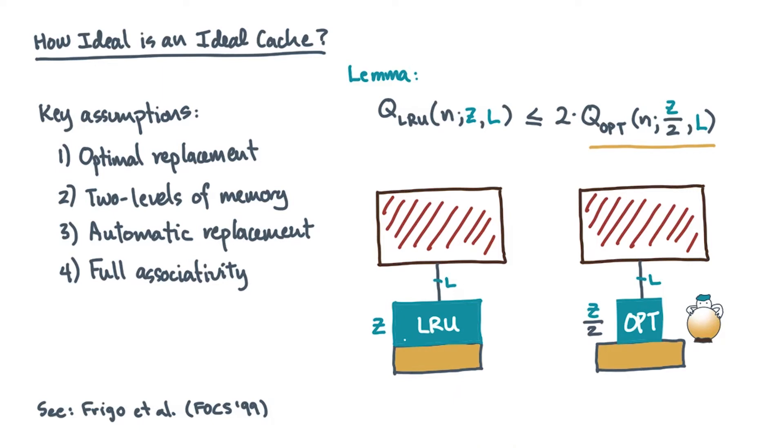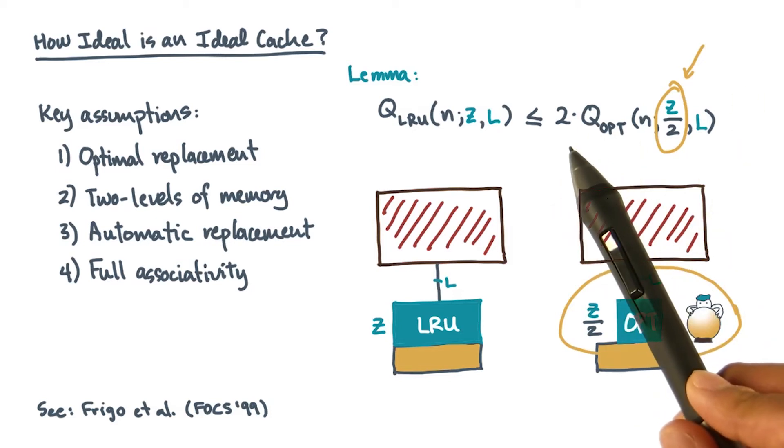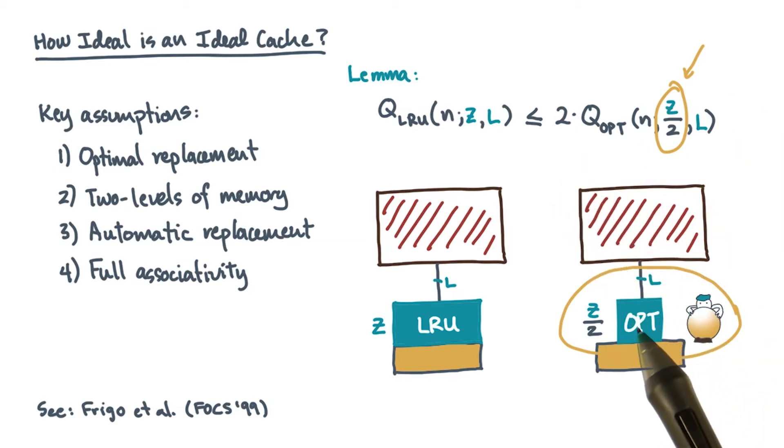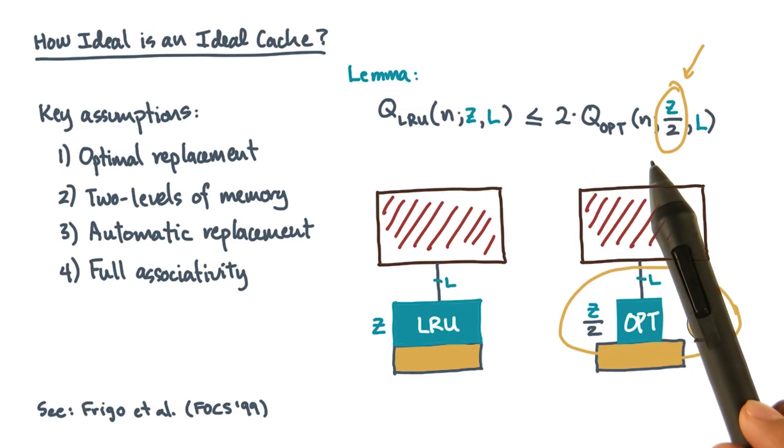In other words, it has a better replacement policy, but it has less space. It's both slightly better, being optimal, but also slightly worse, having less space. The lemma says that the number of transfers on the LRU machine will be within a factor of two of the number of transfers on this slightly better, slightly worse, optimal machine.